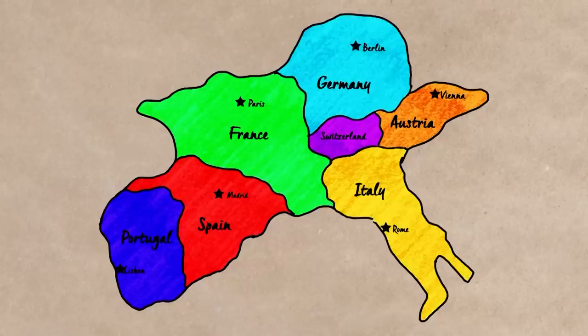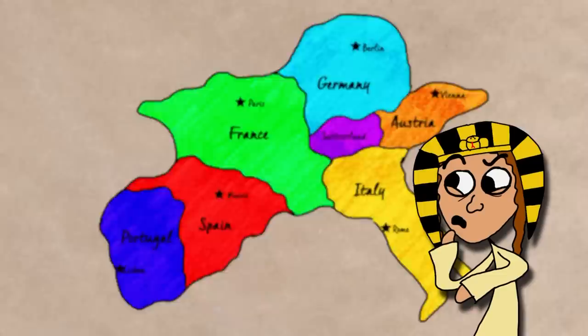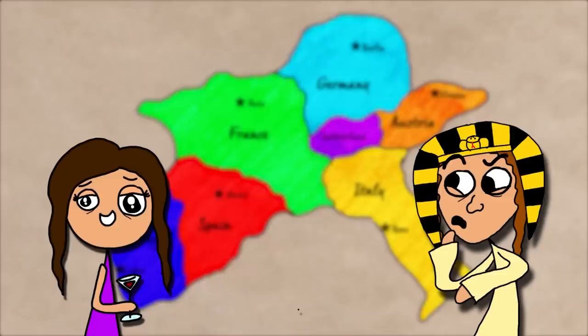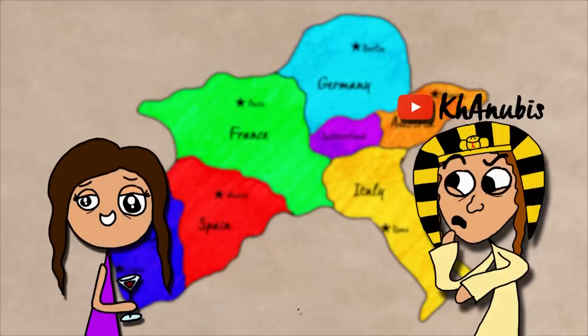So the first step when solving any mathematical problem is to get rid of any unnecessary information. Here, there's a lot of unnecessary information. We don't care that Italy is shaped like a boot or that Paris is the capital of France. Whoa, whoa, whoa. Someone doesn't care about basic geography? I'm not aware of this concept. What's going on here? Guys, this is my friend Willy from the YouTube channel Canubus. He's pretty obsessed with geography and he's made a video about maps too, which I've linked in the description.